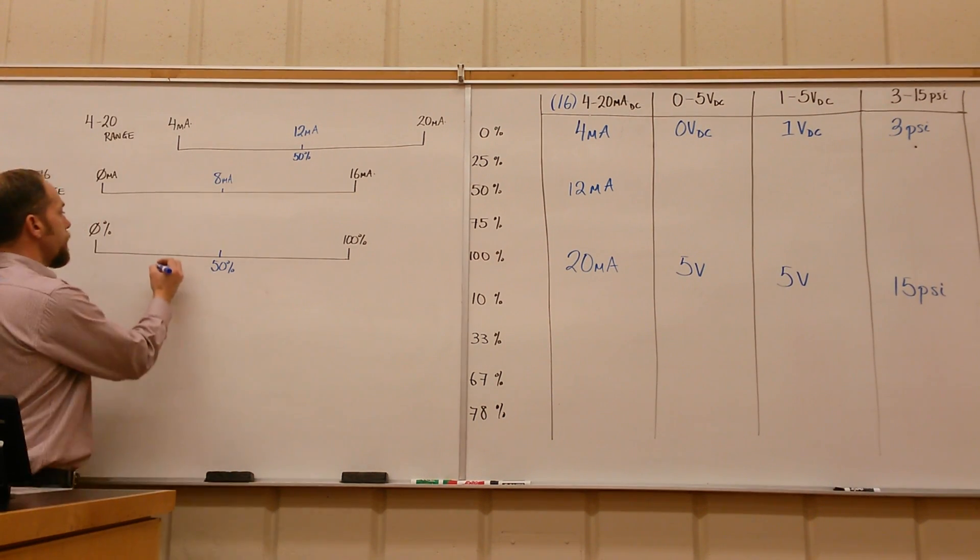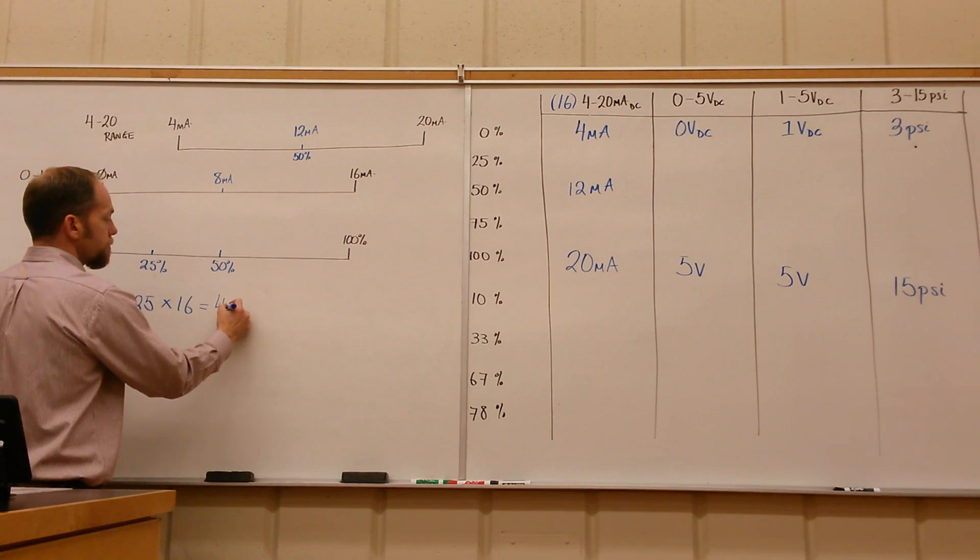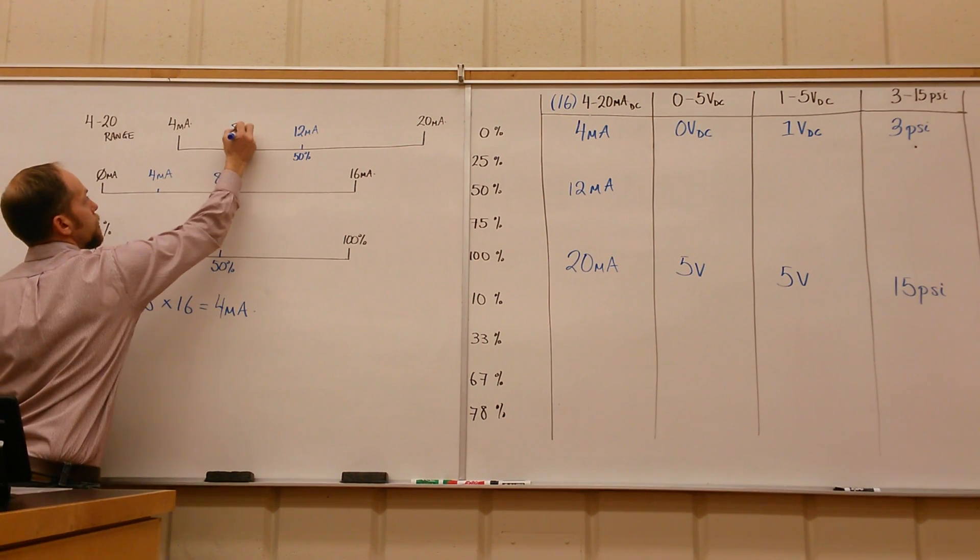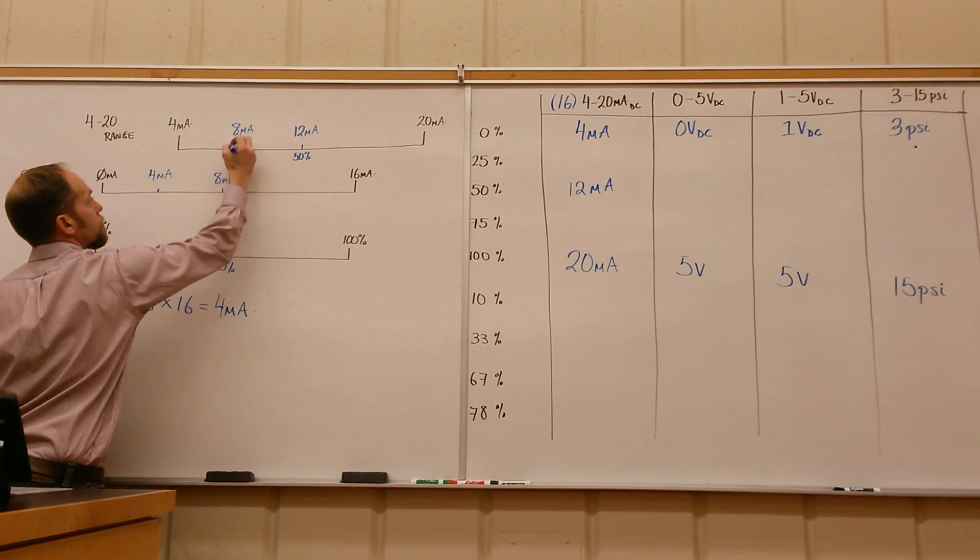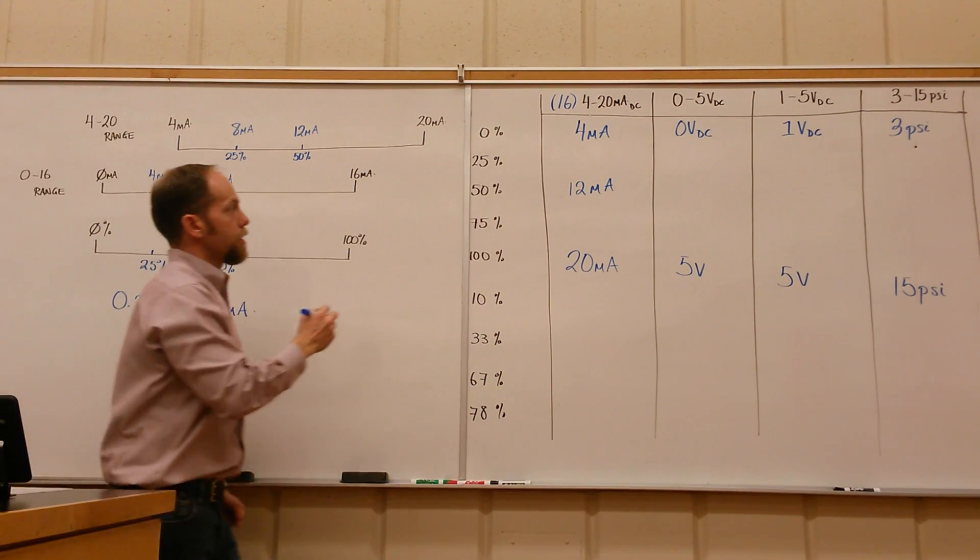We'll put that onto our chart here. If we want to look at 25%, we'll take 0.25 times 16, and that ends up giving us 4 milliamps. On the 0 to 16 range, you end up with 4 milliamps. Now everything bumps up by 4 again, so that 4 milliamps ends up being 8 milliamps corresponding to 25%.